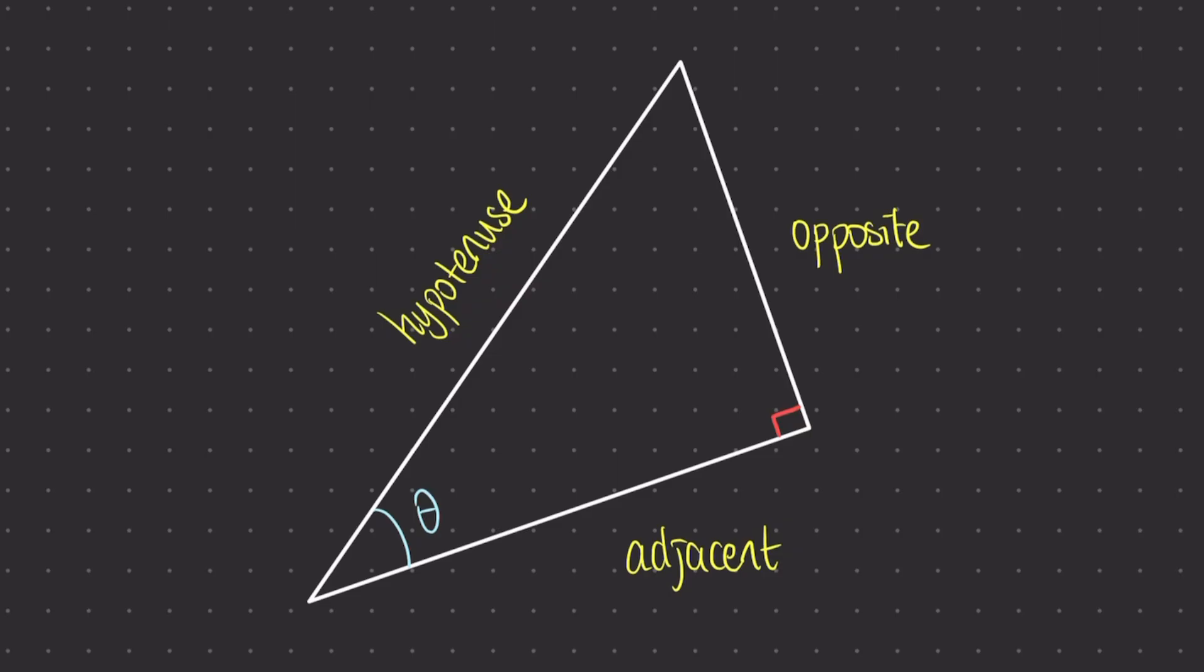So whenever you get a question with a right-angled triangle, and one of the angles labeled, you're probably going to need to label your right-angled triangle with the hypotenuse, opposite, and adjacent. I recommend that you label all three of those sides before you begin the question.